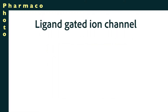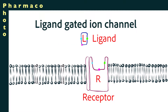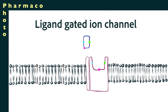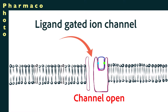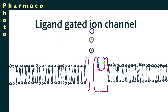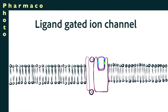The other membrane-bound receptor is a ligand-gated ion channel. When the natural ligand binds to that receptor, the protein undergoes a conformational change that simply opens up an ion channel, allowing positively or negatively charged particles through the cell surface.